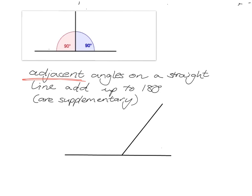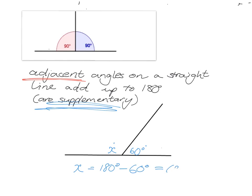It's very important that you actually have a straight line — it's only then that the adjacent angles add up to 180 degrees. 'Supplementary' is just a word you might sometimes hear — it's a fancy way of saying the angles add up to 180. So for example, if this angle here is 60 degrees, then x must be 180 minus 60, which is 120.